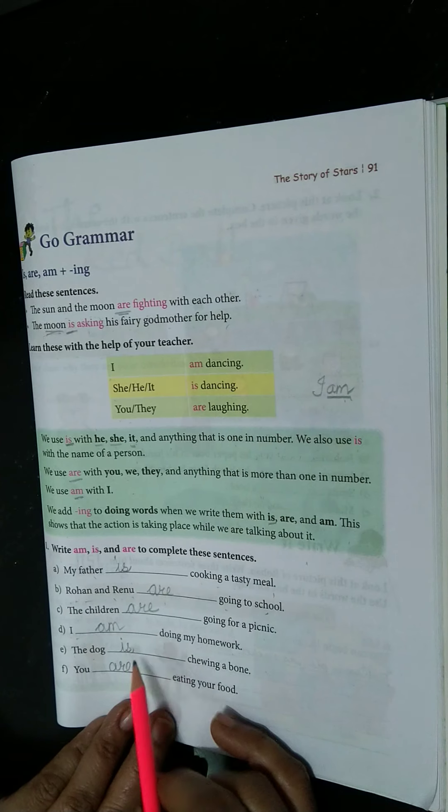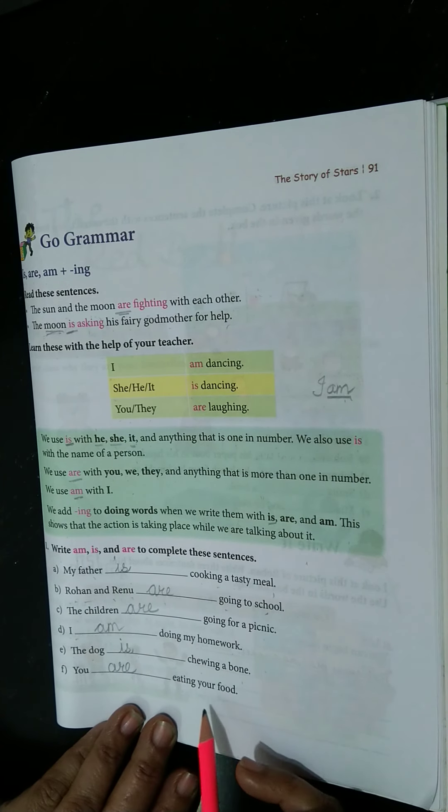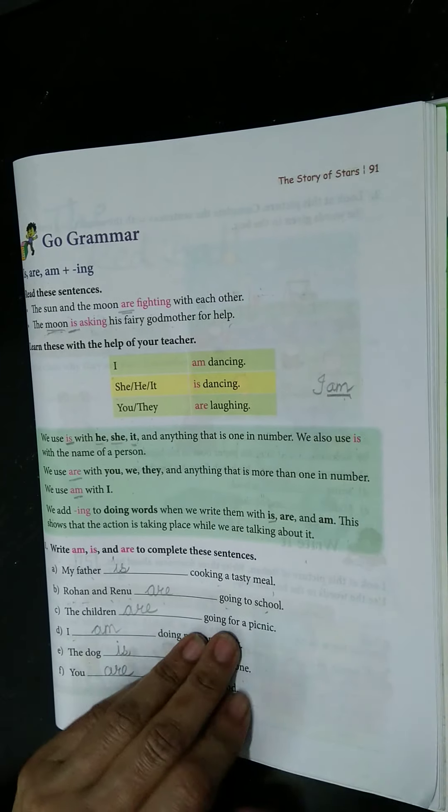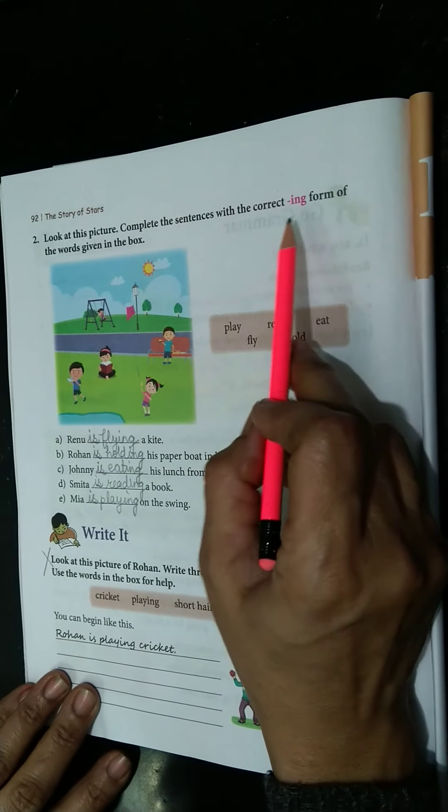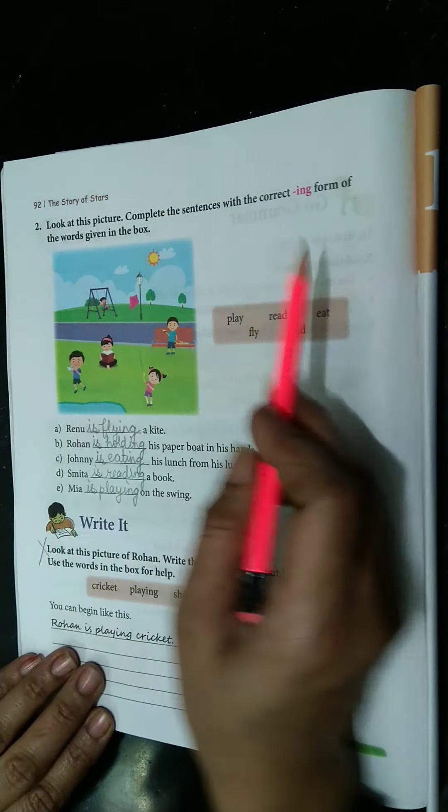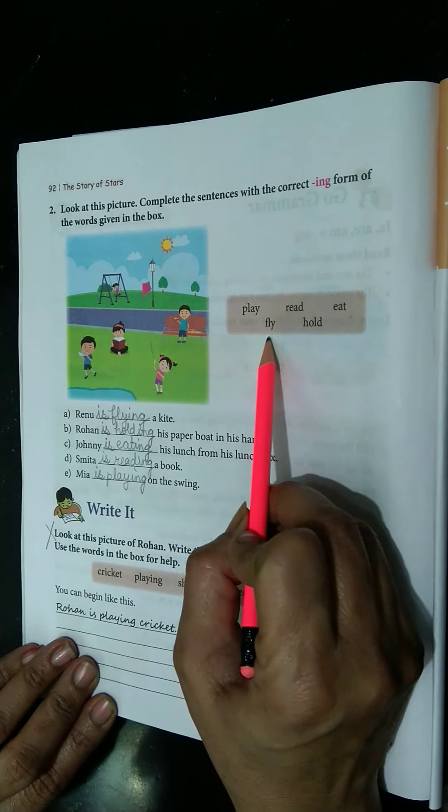The dog is chewing a bone. You are eating your food. Turn the page. Look at the picture. Complete the sentences with the correct ing form of the words given here. So there are different words given. Play, read, eat, fly, hold.